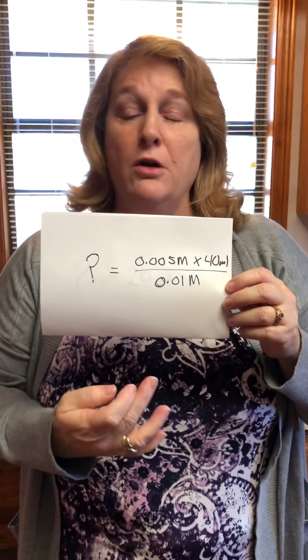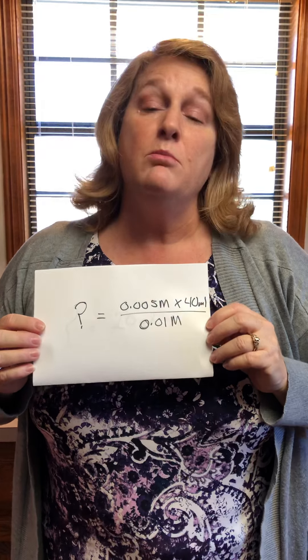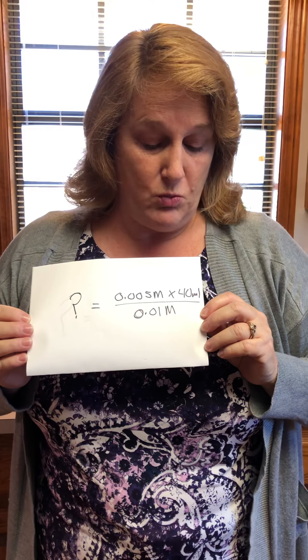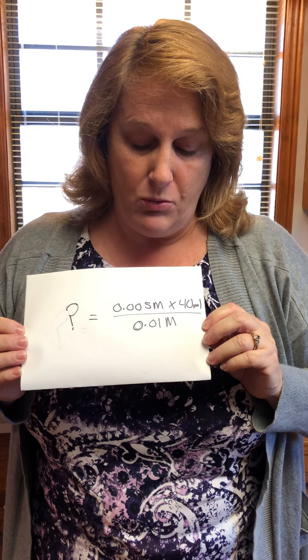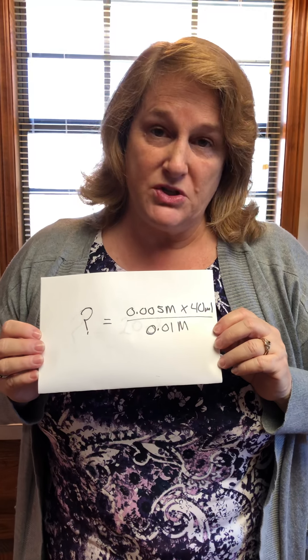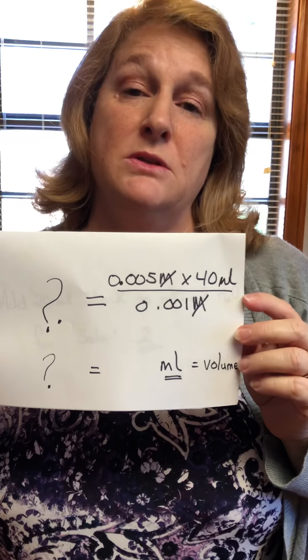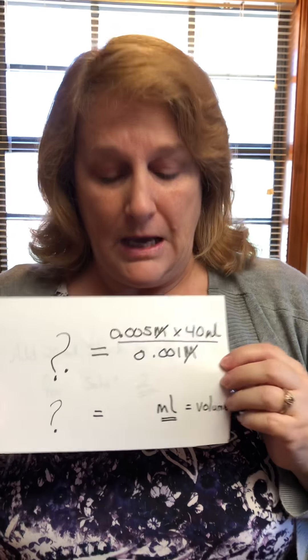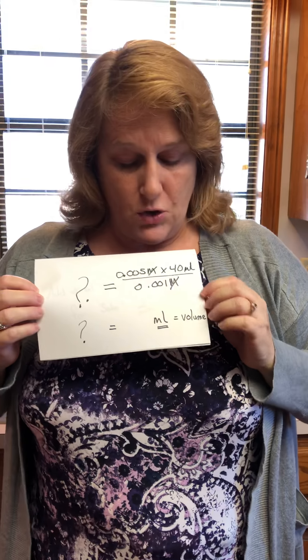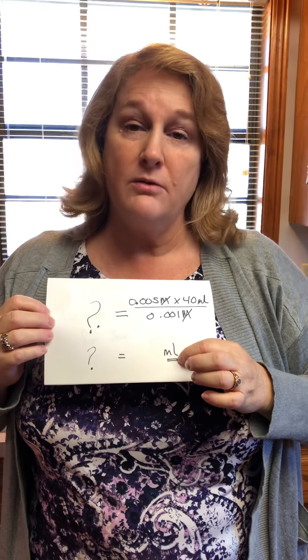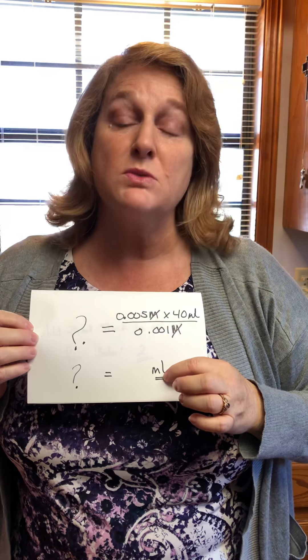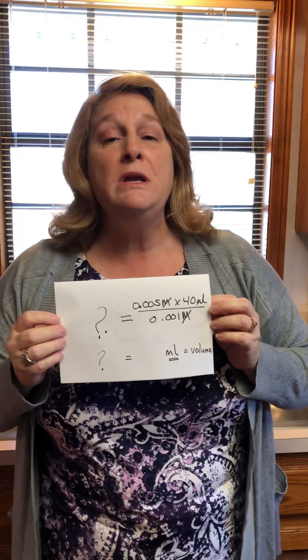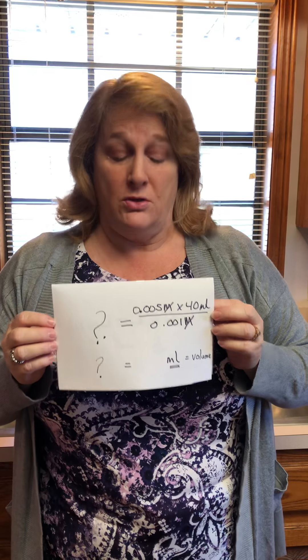We take 0.005 molar times the volume of 40 milliliters, and divide it by 0.01 molar, our stock solution concentration — that puts everything on one side of the equation. Now, you have to pay attention to units. Molarity is concentration and milliliters is volume. You can see here that molarity cancels out, so what we're left with on the other side of the equal sign is milliliters — the volume we're looking for — which tells us how much stock to add to water.